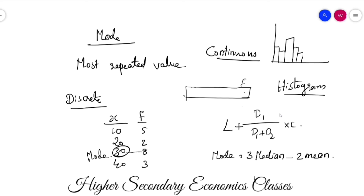If you are interested in finding the mode using this empirical relation, you can calculate it from the mean and median values. This concludes our chapter on Measures of Central Tendency — mean, median, and mode. We will see the next chapter in the next class. Bye!